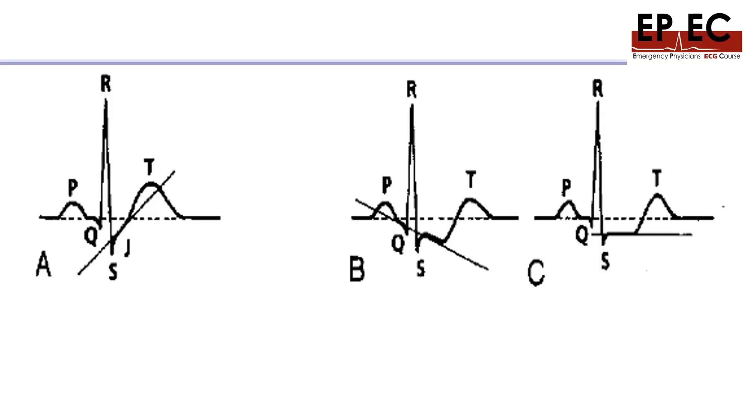ST depression can be upsloping, like this example number A here. It can also be downsloping, and it can be horizontal.